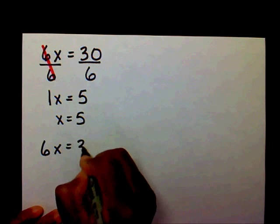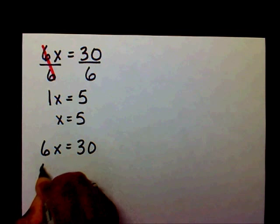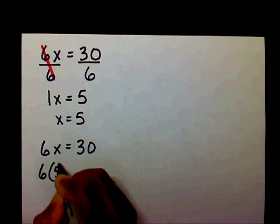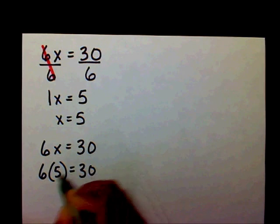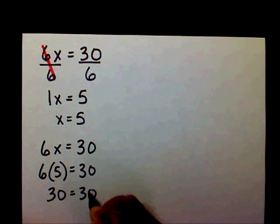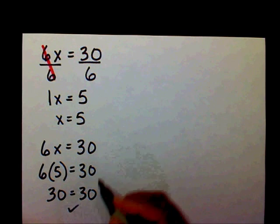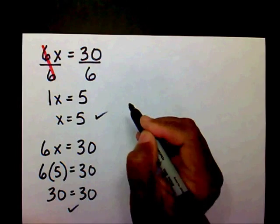So let's check it. 6x equals 30. Substitute your 5 in for your x. So 6 times 5 equals 30. 6 times 5 is 30 and 30 over here on this side. Both sides ended up being the same, so that's correct. Therefore x equals 5.